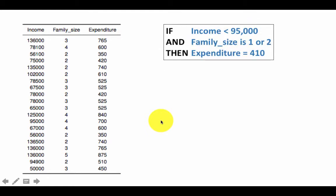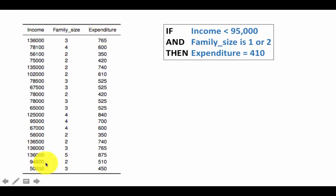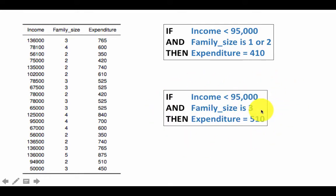The goal is to build a model using historical data — income and family size — to predict how much money families will spend, given that we know their income and family size from reservations but not the expenditure. From data like this we can come up with rules, such as: if income is less than ninety-five thousand and family size is one or two, then the expenditure is four hundred and ten dollars. Or if income is less than ninety-five thousand and family size is three, then expenditure is five hundred and ten.